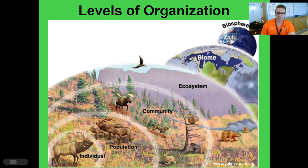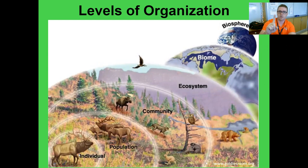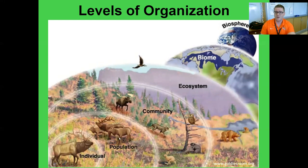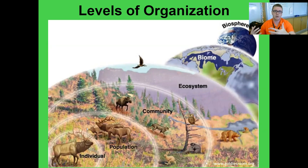We start at the very bottom with that individual — also called the organism level. It's talking about just one of any certain species. I'm an individual human, you're an individual human. But if you put us together, we're forming a population of humans, or in the case of this picture, a population of deer. A population is a group of all the same species in one area.